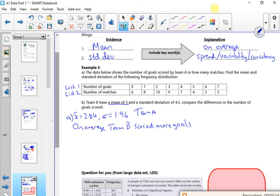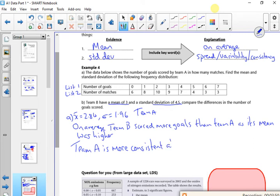Right. So on average, team B scored more goals than team A. Now that's got a standard deviation of 4.5, that's massively variable. So team A is more consistent at scoring goals than team B.